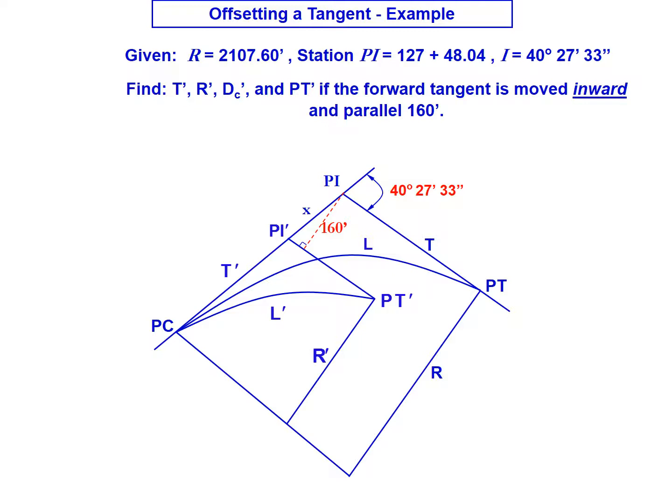It has a PI station at 127 plus 48.04 and an intersecting angle of 40 degrees 27 minutes and 33 seconds.